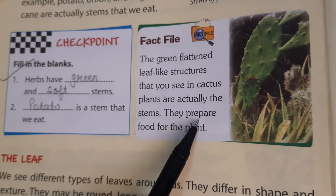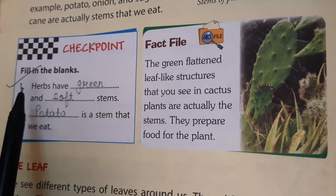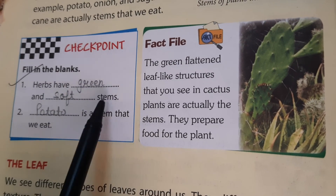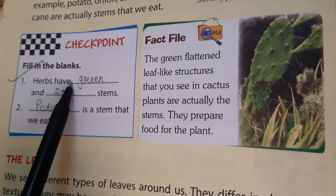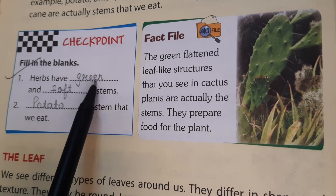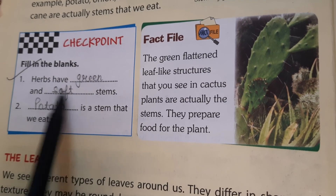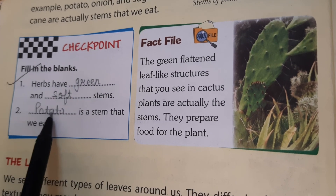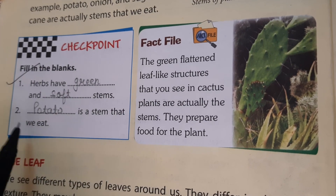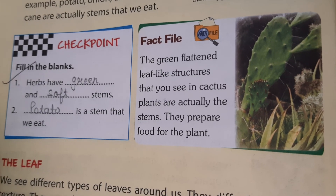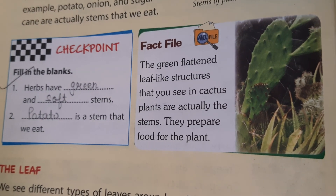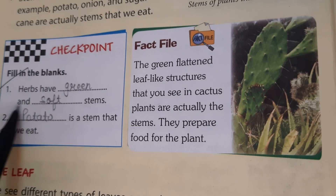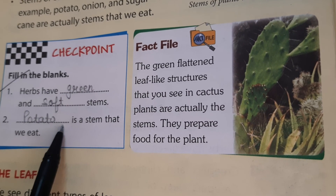Now let's check what we have learned so far. First: herbs have dash and dash stem — what kind of stem do herbs have? Green and soft — the stem of herbs is green and very soft. Second: dash is a stem that we eat — which stem do we eat? You can write potato, onion, or sugar cane.